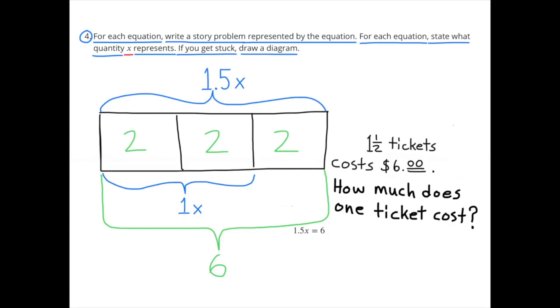And 1 and 1 half tickets cost 6 dollars. 1 X has a value of 2 boxes or 2 plus 2. So the value for X is 4. X equals 4.